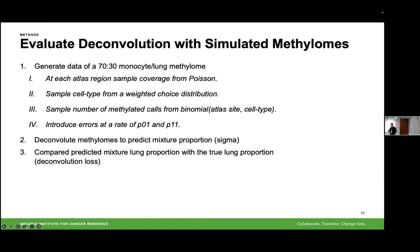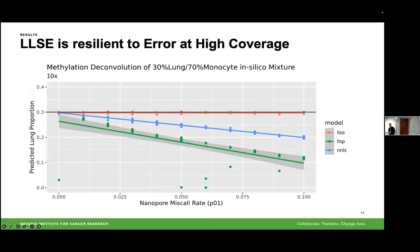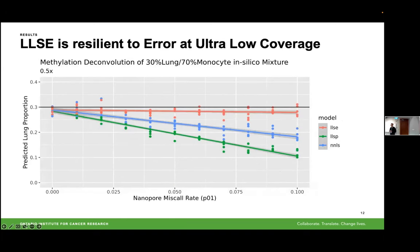We use these distributions to generate a 70–30 monocyte–lung methylome, deconvolute these mixtures to predict sigma, and compare the predicted lung cell proportion to the actual. This data generation gives us flexibility to create interesting datasets. Here we're measuring how the models respond to increasing error in nanopore sequencing. On the x-axis is an increasing miscall rate; on the y-axis is the predicted lung proportion. The NNLS model decreases in accuracy as the miscall rate increases, but the LLSP model stays relatively the same. And at 0.5× coverage, the LLSP model still maintains quite high accuracy.